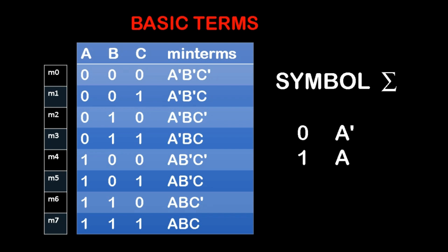Now we will find out the min terms and fill the table. The inputs for the first row are 0, 0, 0. In the input combination, if the value is 0 for A, then as per the rule, 0 indicates A dash. Likewise, you have to fill the entire table. In the first row with all three combinations 0, 0, 0, you get the min term A dash, B dash, C dash. For M4 with combination 1, 0, 0: 1 indicates uncomplemented term, so it is A; then 0 indicates B dash and 0 indicates C dash. So that is the min term — min terms are nothing but product terms.